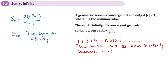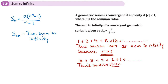However, if we took exactly the same series and wrote it back to front, this series does have a sum to infinity, because each term you're adding is going to get smaller and smaller, so it's going to get closer and closer to some sort of limit that it will never reach. This series does have a sum to infinity, and the reason is each term is smaller than the last — that happens because r is greater than zero and less than one.